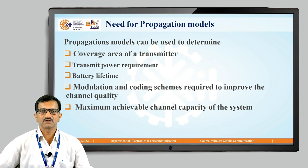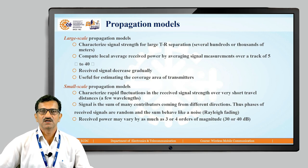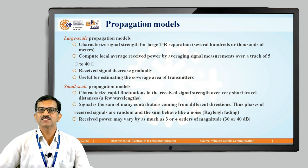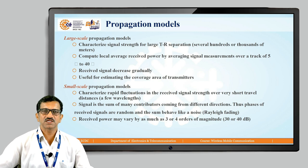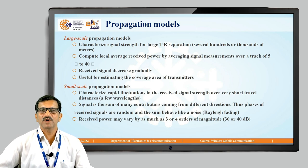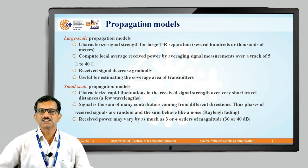With the help of propagation models, systems can be designed based on these parameters. Propagation models are broadly classified into large-scale and small-scale propagation models. Large-scale models characterize signal strength for large transmitter-receiver separations — several hundreds to thousands of meters — such as satellite communication channels. They compute local average received power by averaging signal measurements over a track of 5 to 40 kilometers, with received signal decreasing gradually, useful for estimating the coverage area of a transmitter.